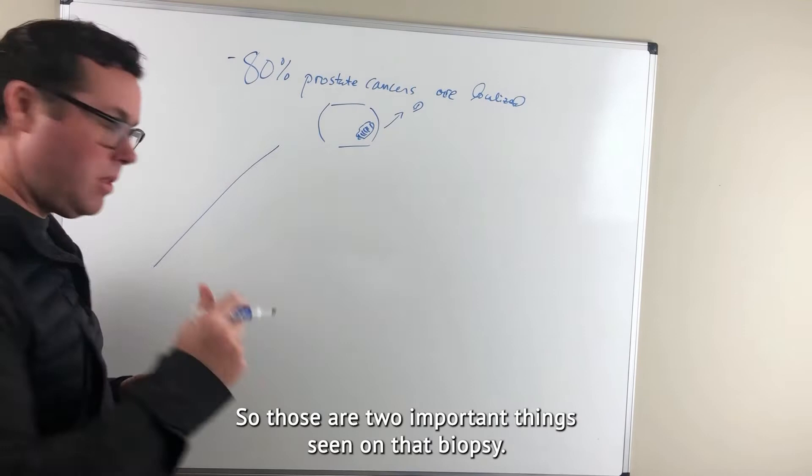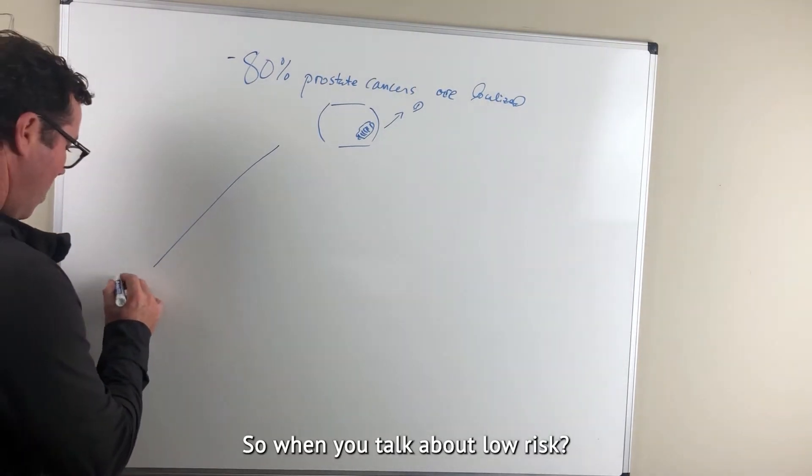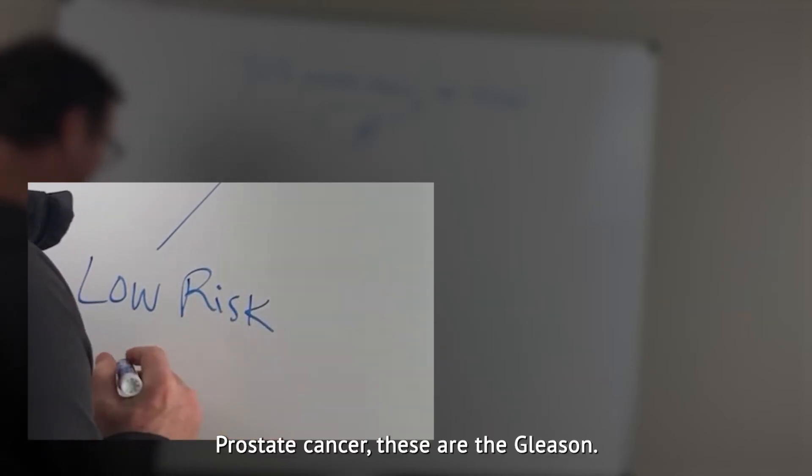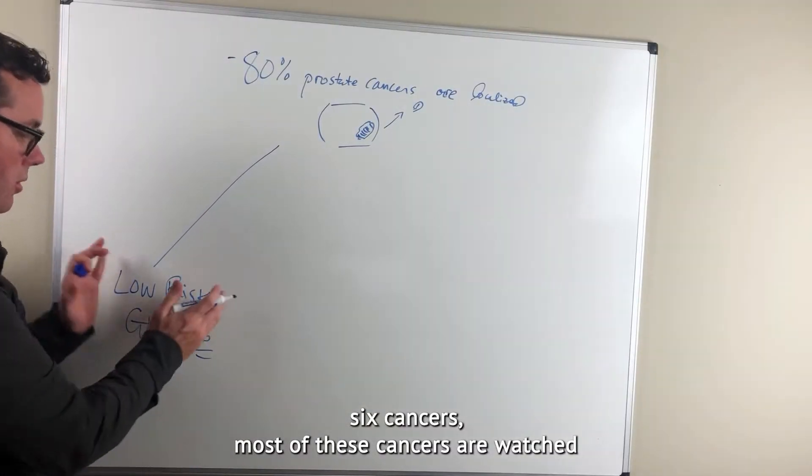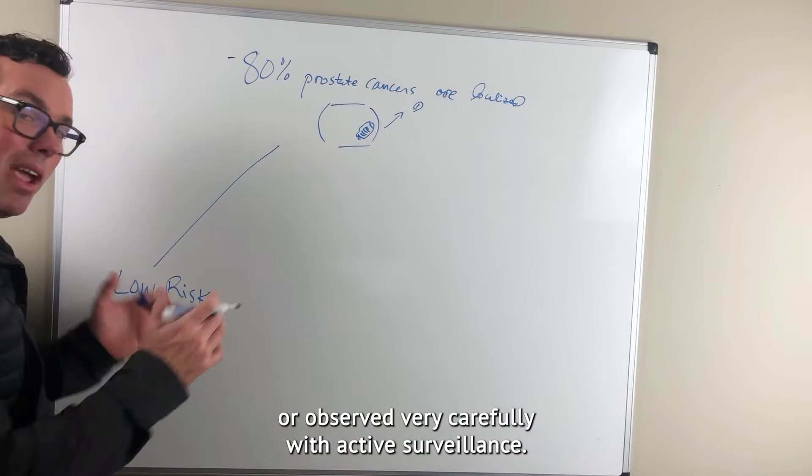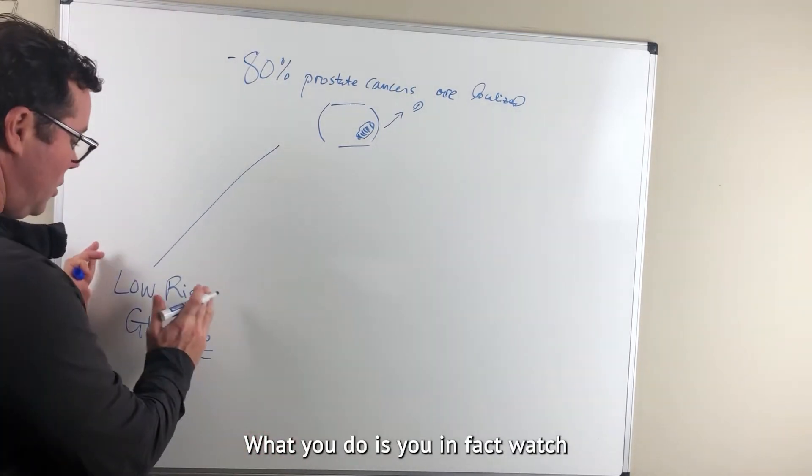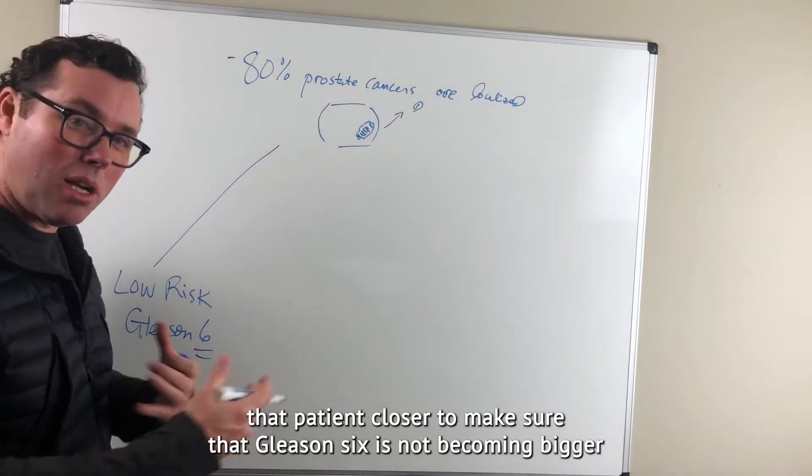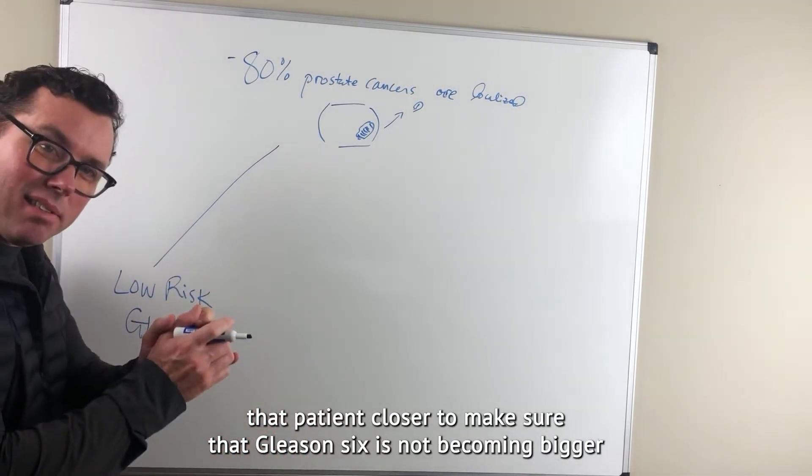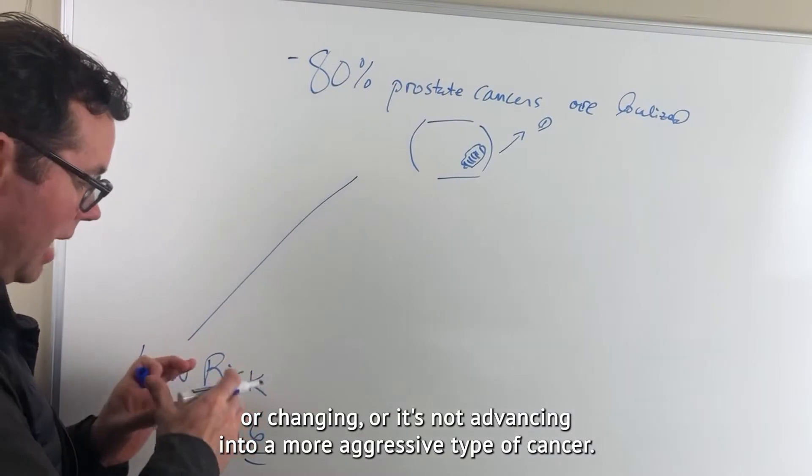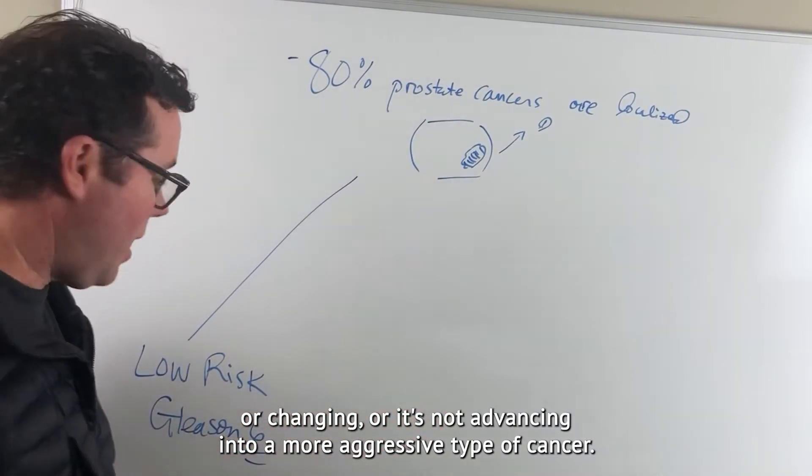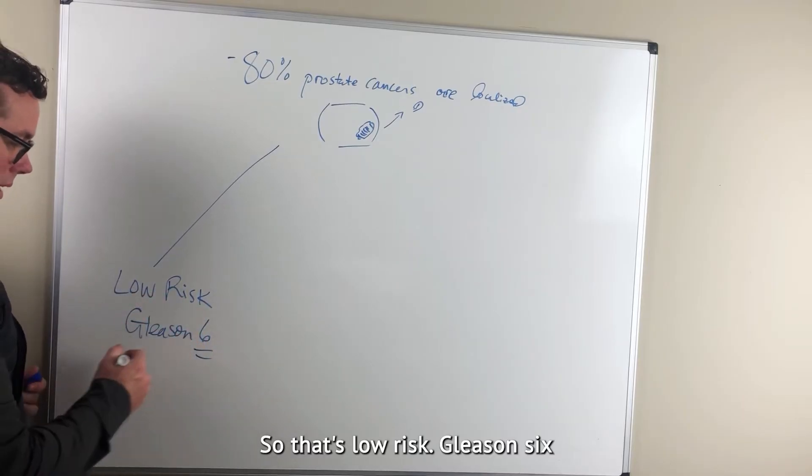When you talk about low risk prostate cancer, these are the Gleason 6 cancers. Most of these cancers are watched or observed very carefully with active surveillance. You don't just not watch them. What you do is watch that patient closer to make sure that Gleason 6 is not becoming bigger or changing, or advancing into a more aggressive type of cancer.